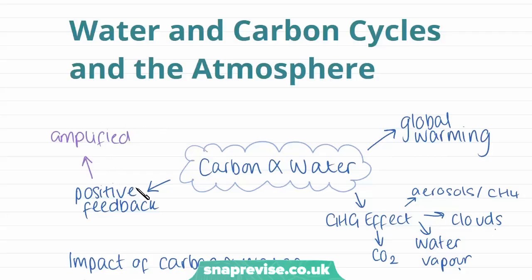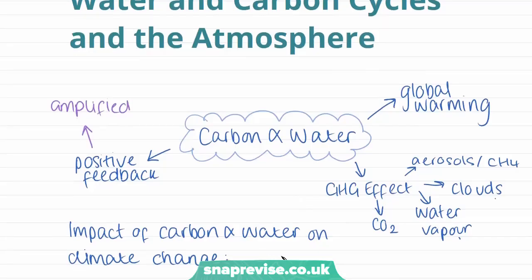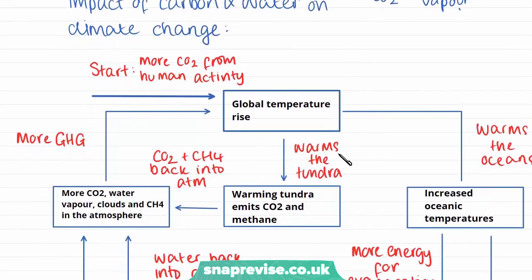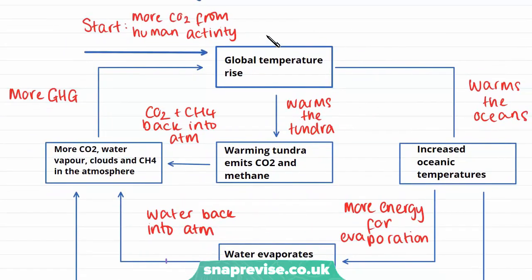This means that any initial input is amplified, so this initial warming is going to cause increased warming because it's being amplified. Now we're going to look at the impact of water and carbon on climate change specifically through this positive feedback cycle. The main input to this cycle is more carbon dioxide being released into the atmosphere from human activity, such as the increased use of fossil fuels.